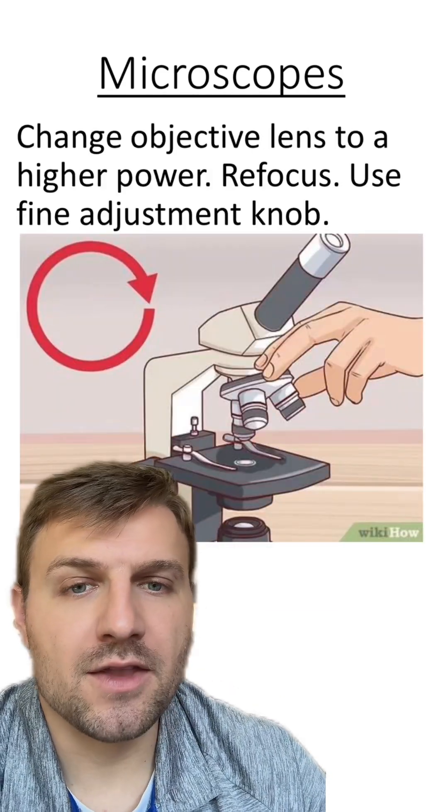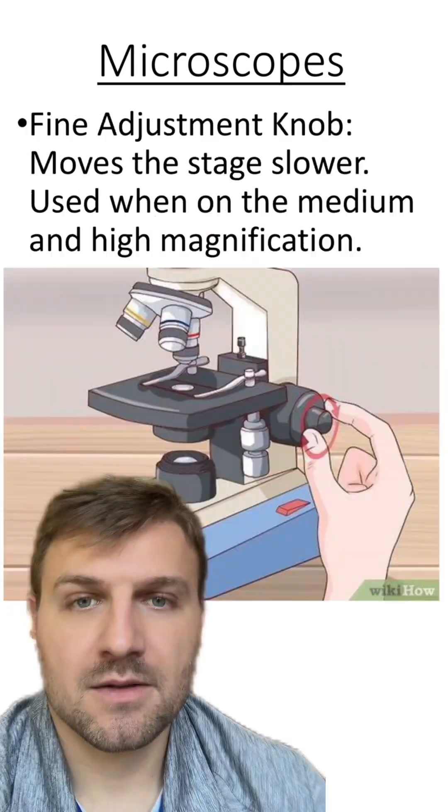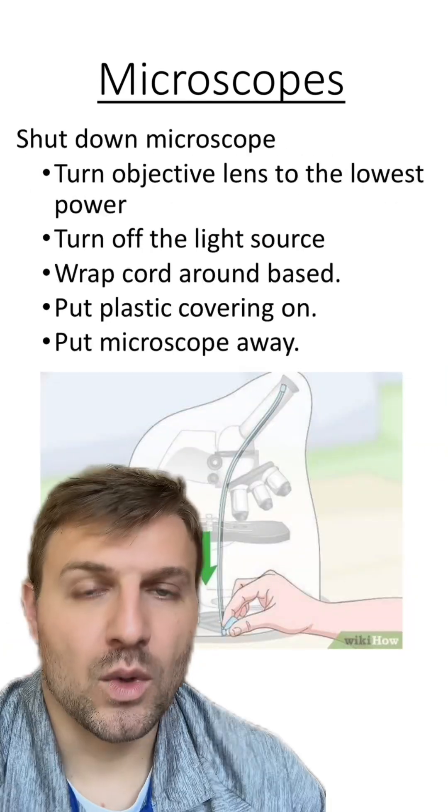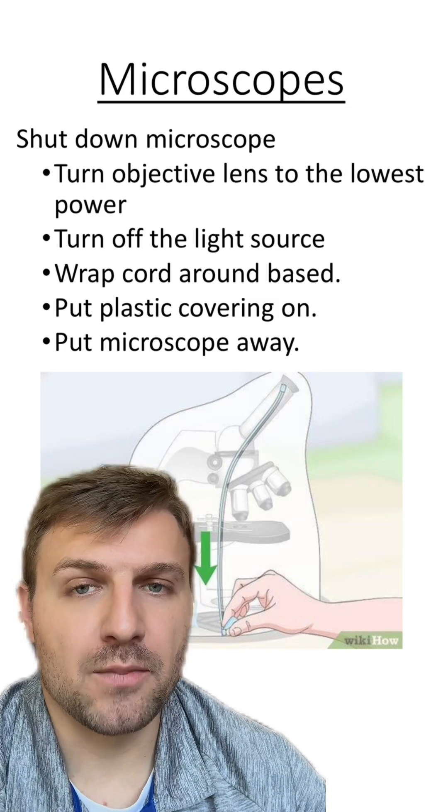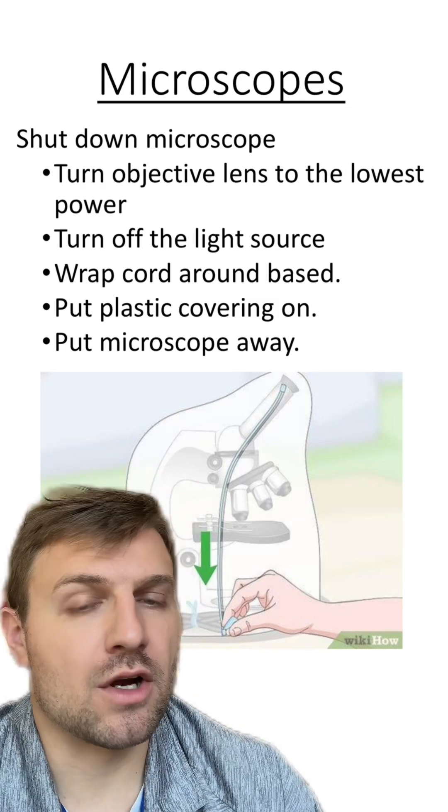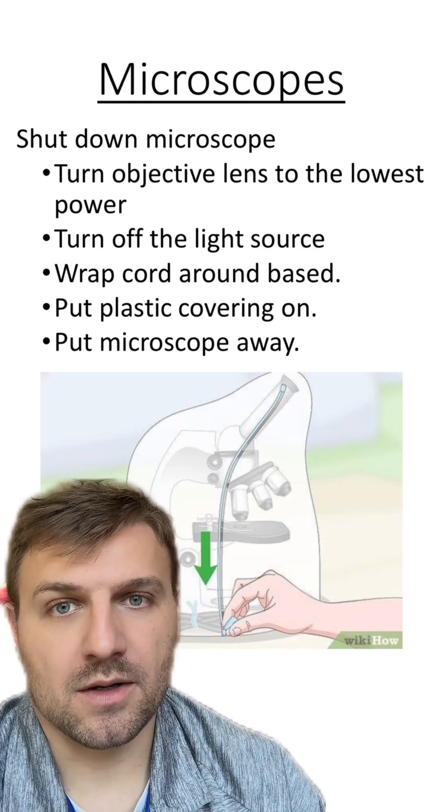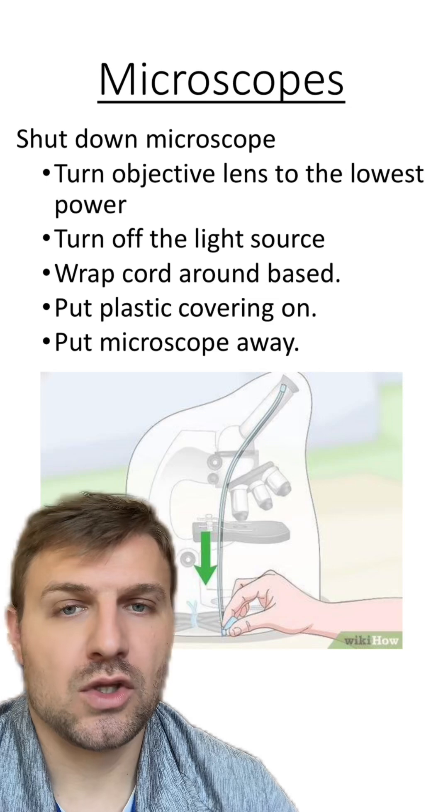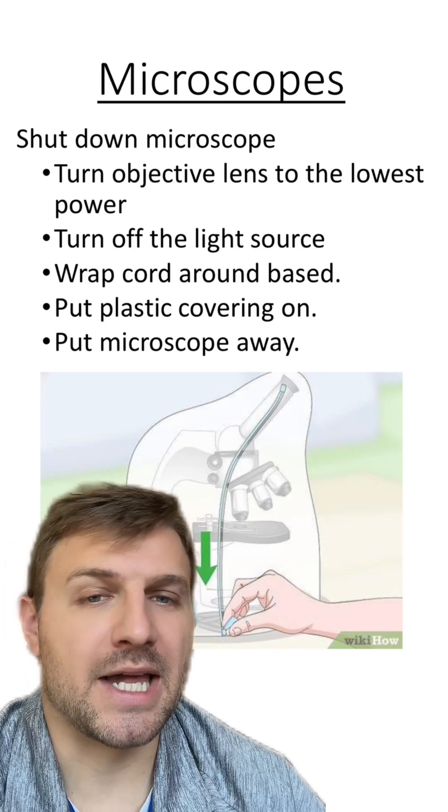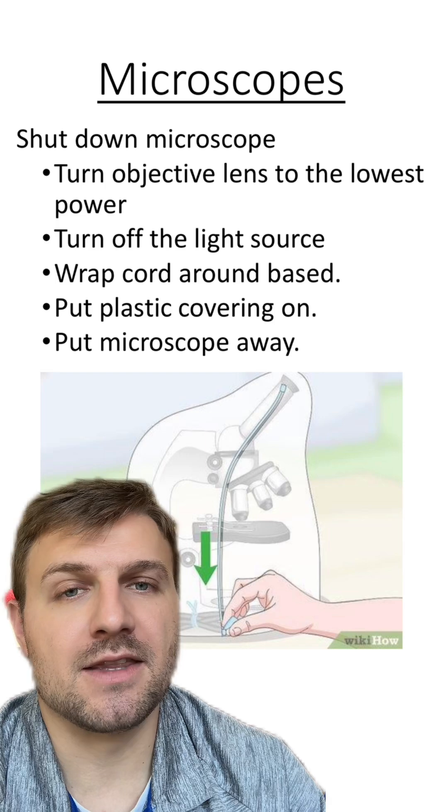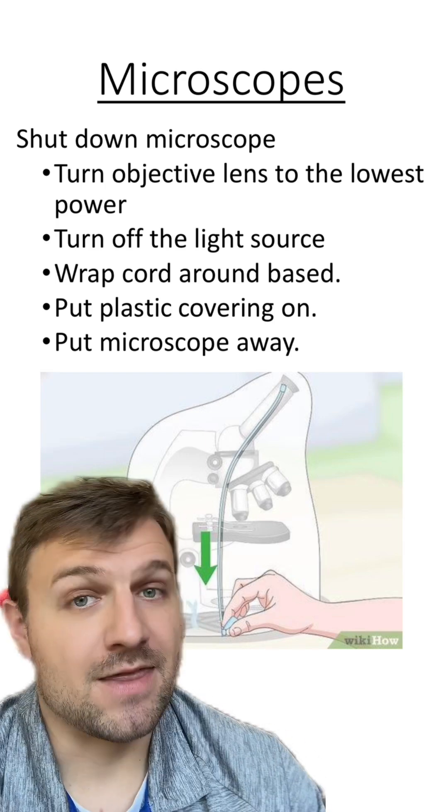After refocusing it on the medium objective lens, you're going to move up to the highest objective lens and refocus it once again. When you're done using the microscopes, you have to make sure to put it away properly. First, you turn the objective lens to the lowest power. Next, you turn off your light source. You wrap the cord around the base and put the plastic covering on it and make sure you place it in the correct location. And that's how you use a microscope.